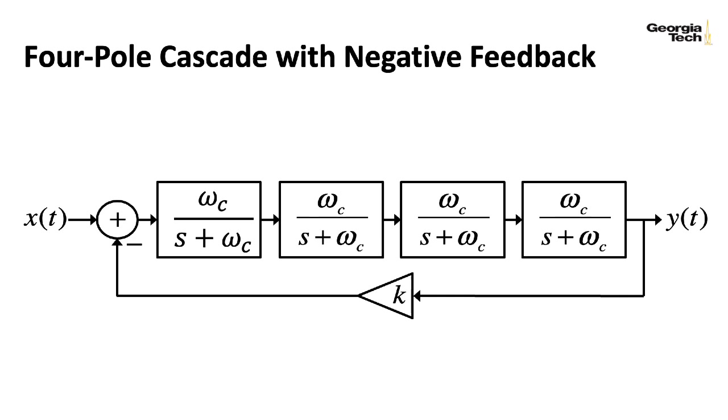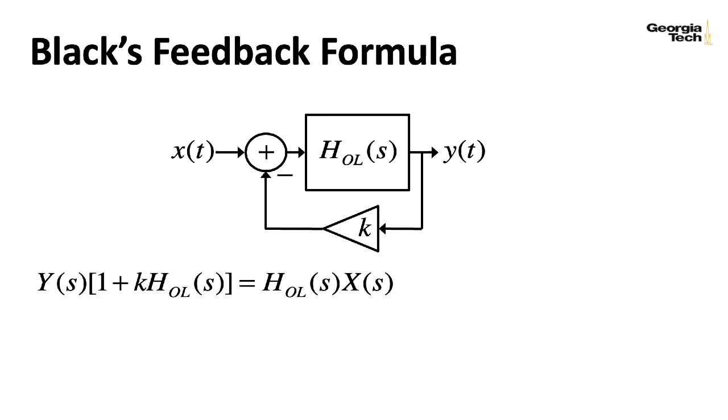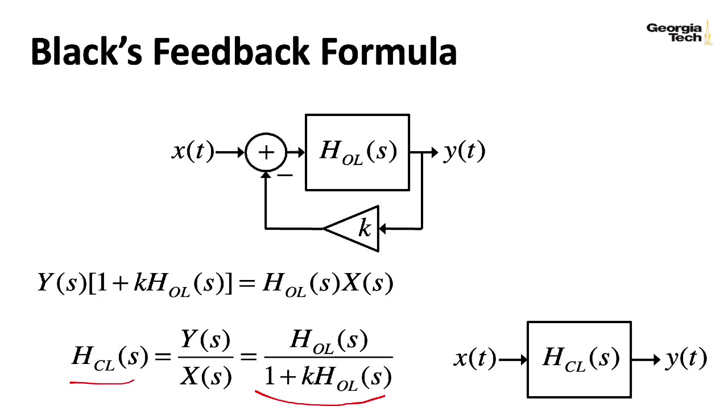So to get a handle on how the feedback operates, let's review how negative feedback works. As we saw last time, if we have an open loop transfer function, and we have negative feedback with a factor of k, we can replace that entire setup with a closed loop transfer function given by this formula. So we have the transfer function of the open loop system in the numerator and the denominator, but the feedback factor only shows up as a constant in the denominator.